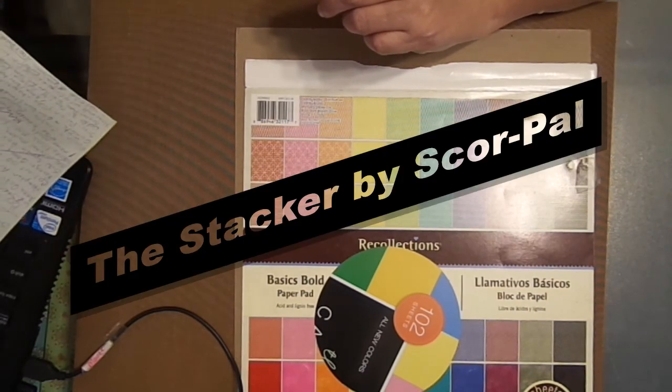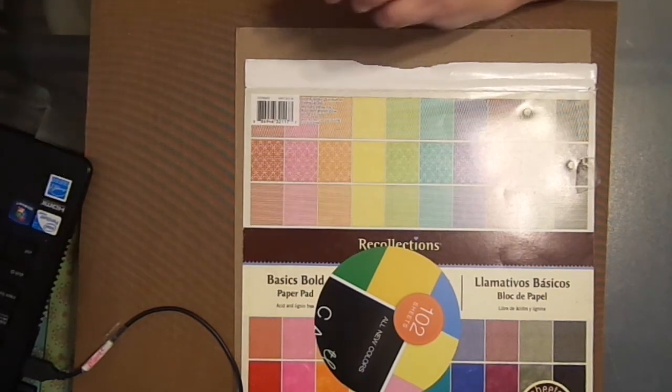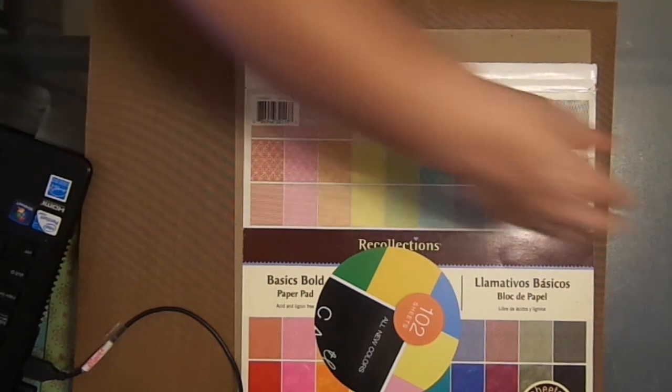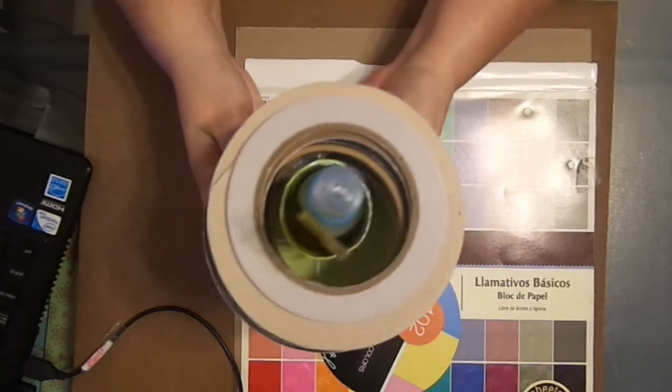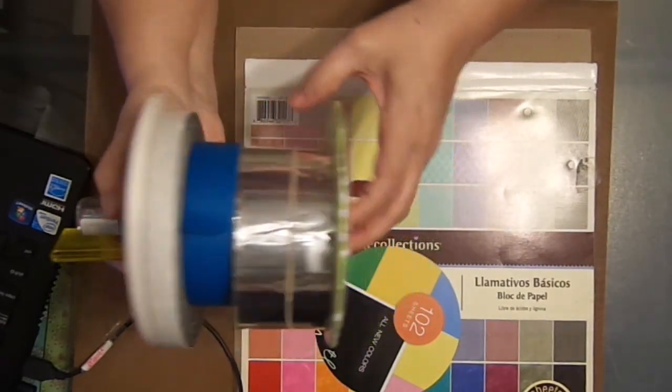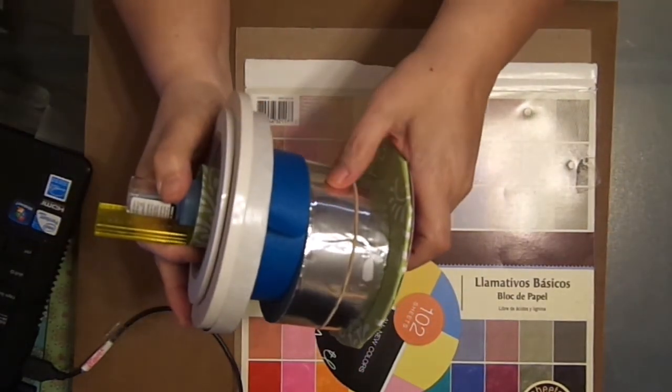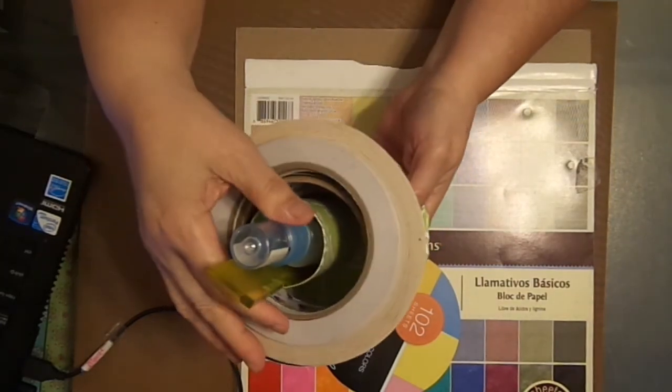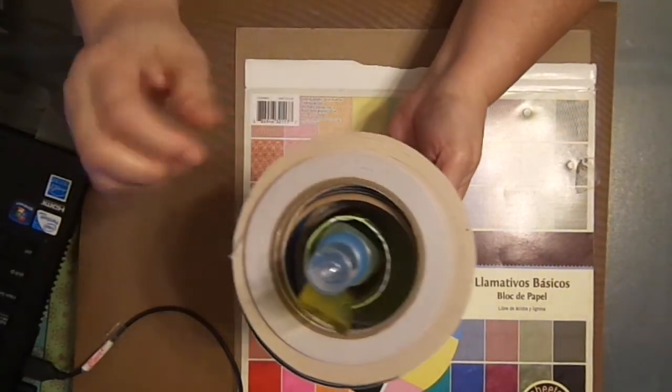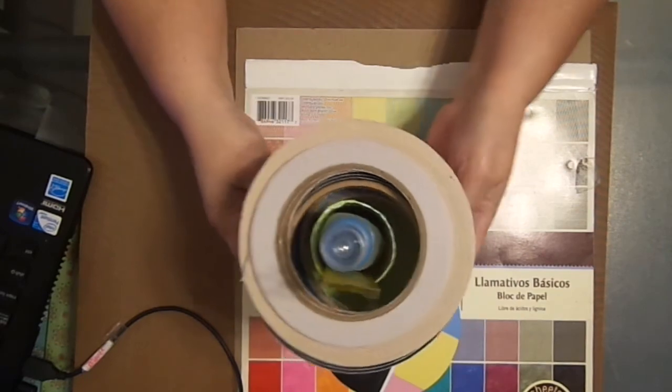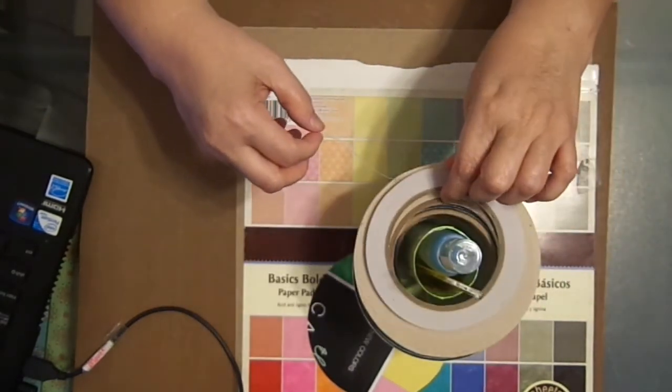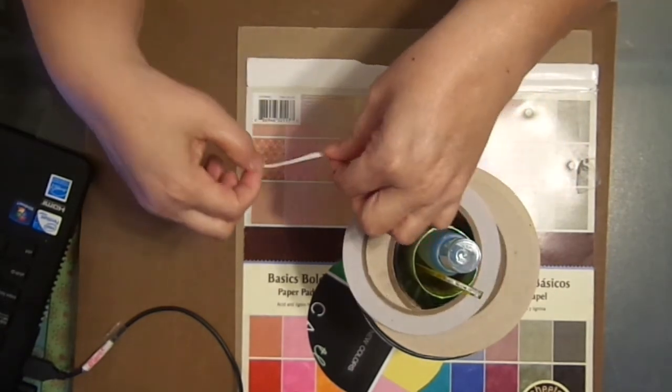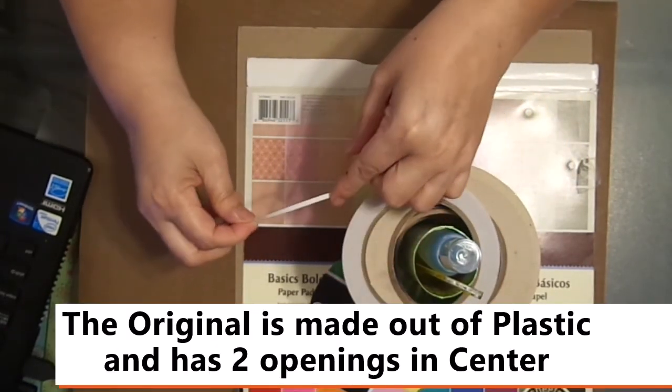It's called the Stacker from ScorePal. And what it does... Here's the finished project. Let me move this out of the way. And see, here it is. But what it's meant for is for you to store all your adhesives that you currently use on a regular basis. So they're always right there by your fingertips. And what's nice about it is you use it when it's on the stand and you put it where you need to put it.